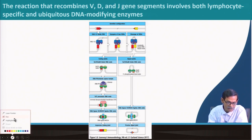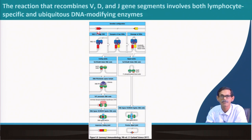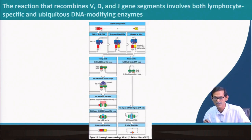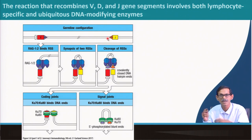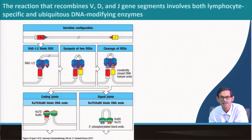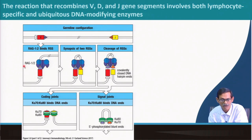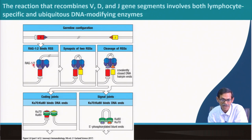If you see this V segment and this J segment 1 with 23 and 12 spacers, we will see how J and V come together. First, there is a protein called RAG — R-A-G. It is actually the product of the Recombination Activating Gene. There are two different proteins: RAG1 and RAG2.